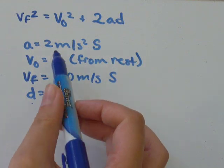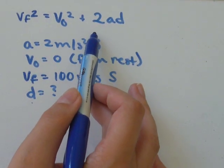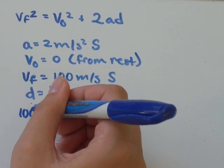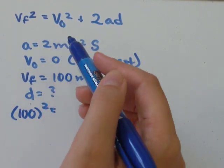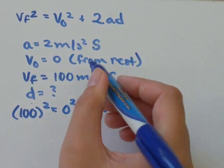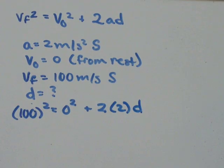So all you need to do once you know what formula to use is plug everything in and solve for your unknown. So VF squared would be 100 squared equals V0 squared would be 0 squared plus 2, A with 2, and D is our unknown.